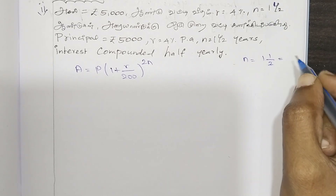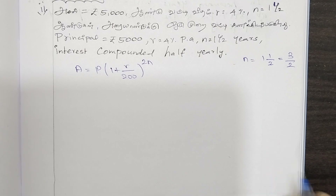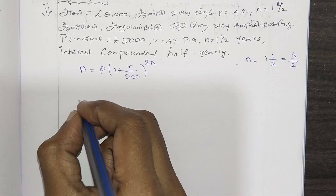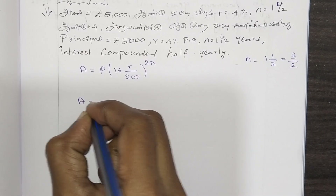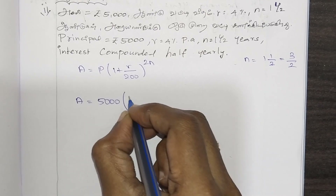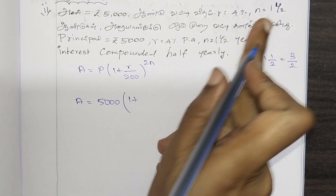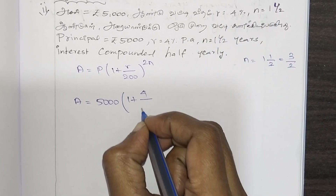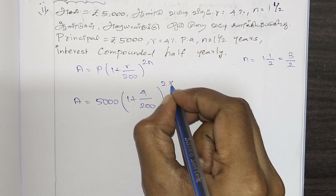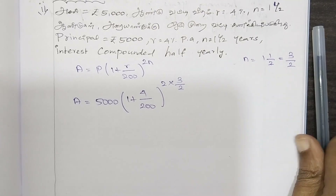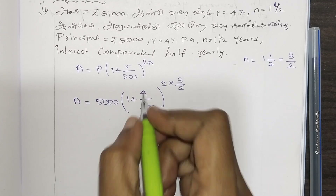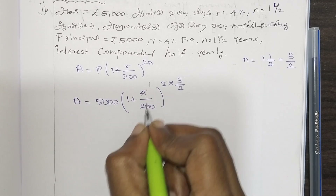2 into 1 is 2, plus 1 is 3. So we have P into 1 plus r, which is 4 by 200, and 2 into n gives us 2n. The 2 and 2 will cancel.